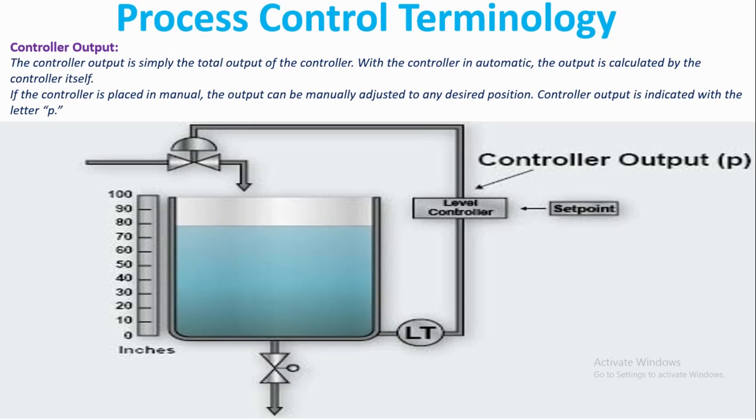If the controller is placed in manual, the output can be manually adjusted to any desired position. Controller output is indicated with the letter P.